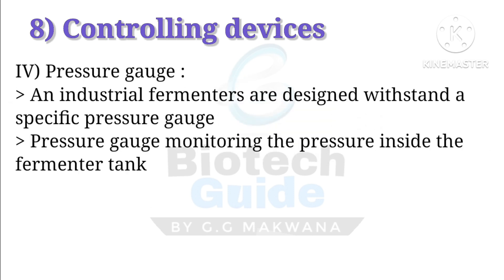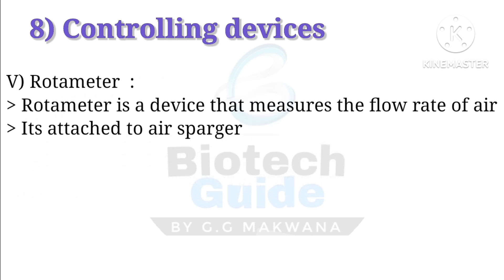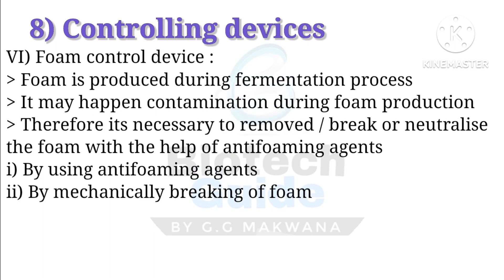The fourth controlling device is the pressure gauge. Industrial fermenters are designed to withstand a specific pressure, and the pressure gauge monitors the pressure inside the fermenter tank. The fifth is the rotameter, a device that measures the flow rate of air attached to the air sparger. The sixth is the foam control device: foam is produced during fermentation, which may cause contamination, so it is necessary to remove it using anti-foaming agents or by mechanically breaking the foam.